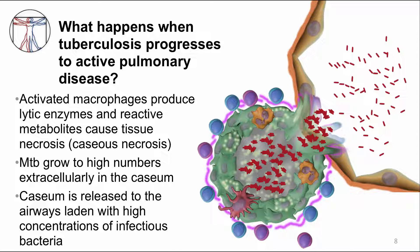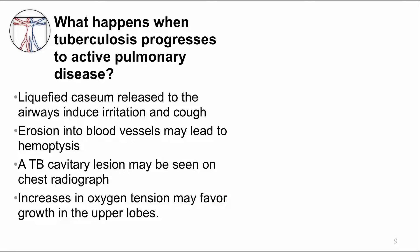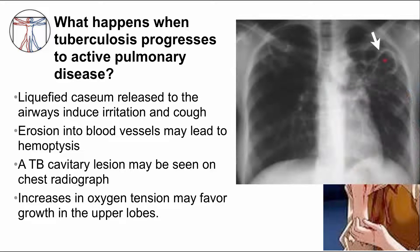With more MTB replication and more inflammation, the caseous necrosis liquefies and caseum with high concentrations of MTB bacilli discharges into the airway. In the person, discharge of the MTB-laden caseum irritates the airways, inducing cough, which may be a productive cough of bloody sputum if a blood vessel has been damaged. On chest x-ray, a cavity can be seen. You can see a cavity in the upper right apex of the lung, which is a common location to see cavities from TB disease. One theory is that the upper lobes have increased oxygen tension allowing optimal MTB replication.